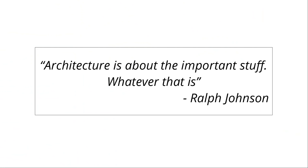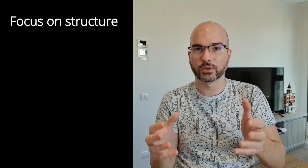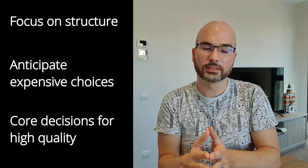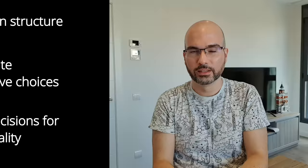Software architecture has many definitions. One of the most famous ones is from Ralph Johnson, where he says architecture is about the important stuff, whatever that is. But what is important stuff? In software architecture we focus more on the structure than the implementation details. Software architecture is also about making the expensive choices that are costly to change after they are implemented, and making explicit the core decisions that will allow the software to have high quality. Concepts are better understood in practice — let's build an e-commerce site and see how that looks.